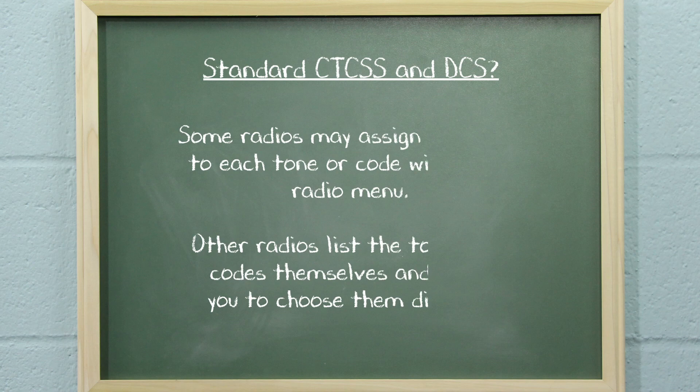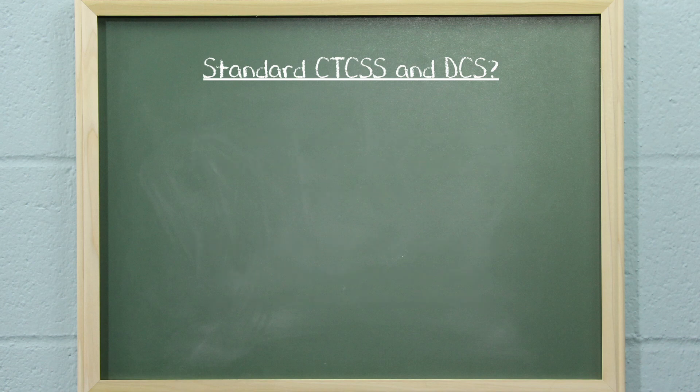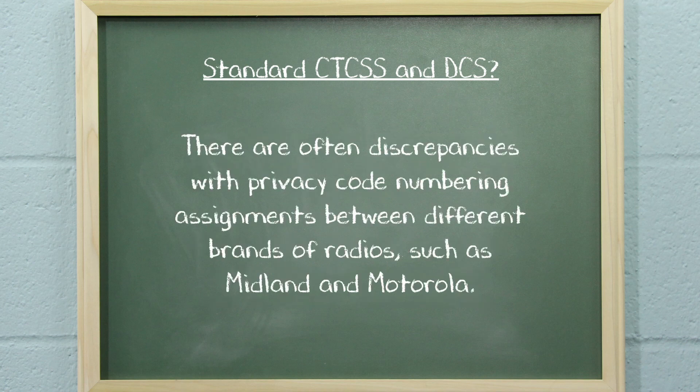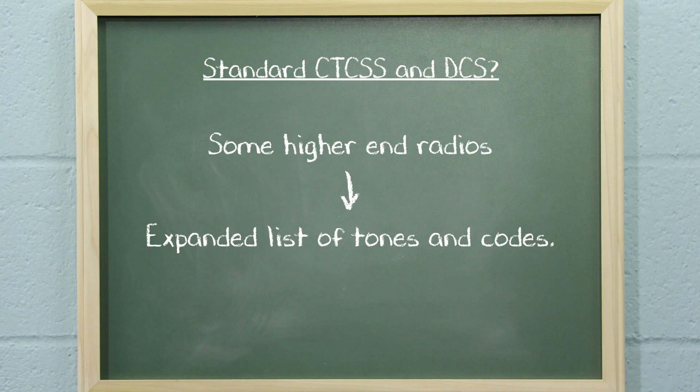Some consumer and business radios that support CTCSS and DCS may assign a number to each tone or code within the radio menu for selection and programming options. Other radios simply list the tones and codes themselves and allow you to choose them directly. As mentioned in previous episodes of Radio 101, there are often discrepancies with privacy code numbering assignments between different brands of radios, such as Midland and Motorola. Also, some higher-end radios support an expanded list of tones and codes.